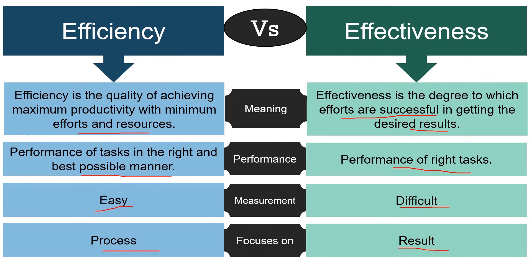To further elaborate, efficiency is concerned with the use of resources — money, people, information, and machinery. On the other hand, effectiveness is how successful you are in getting the desired results with minimum efforts. So efficiency is all about the means of completing the task, whereas effectiveness is related to the ends, i.e., attainment of the organizational goals.